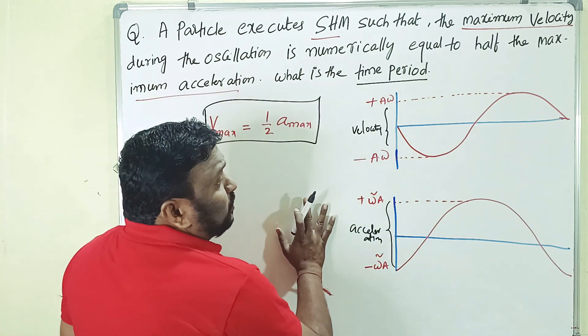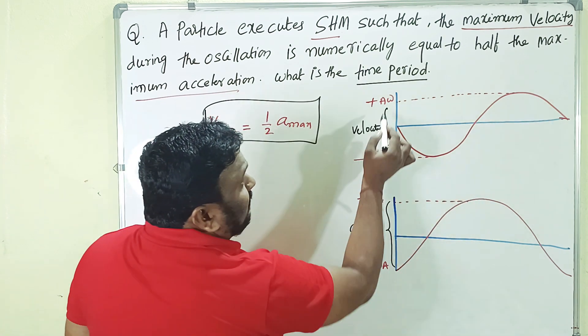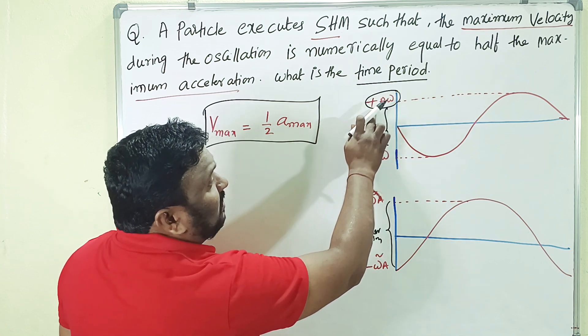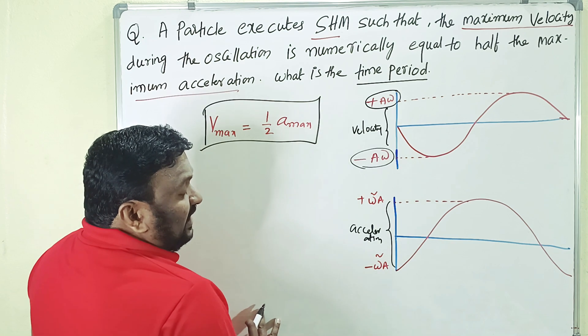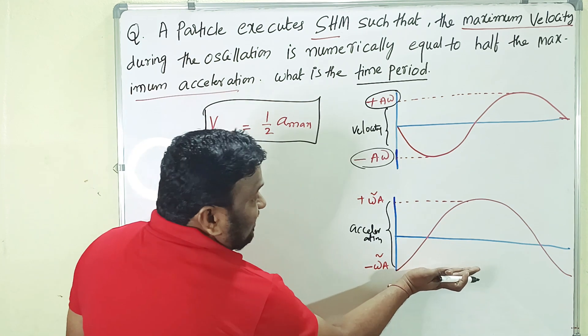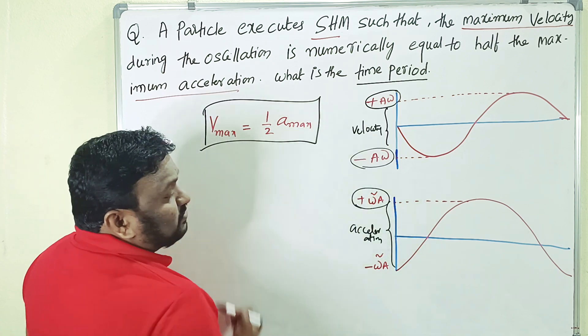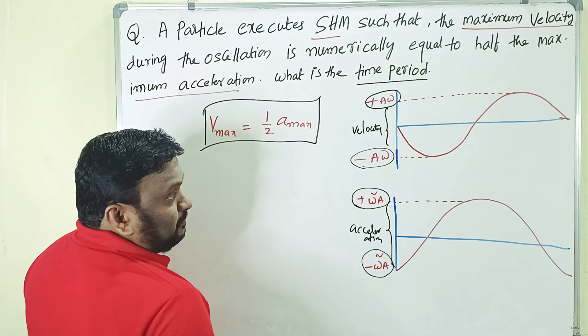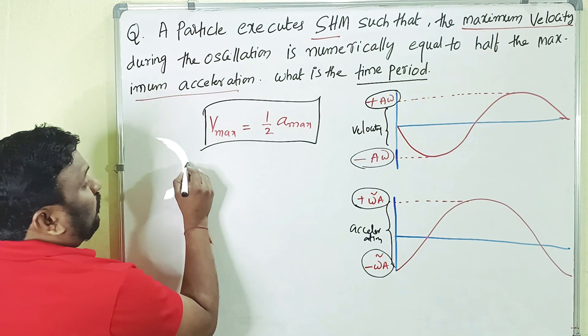Look here. The velocity should be shown like this. Here it is a sinusoidal wave. The maximum velocity, the maximum value of velocity is what? Plus A omega, and minimum value is minus A omega. And from this graph defines the acceleration. The maximum value of acceleration is what? Omega squared A, and minimum value is minus omega squared A.